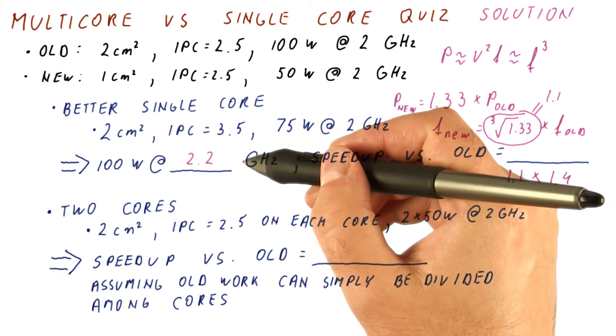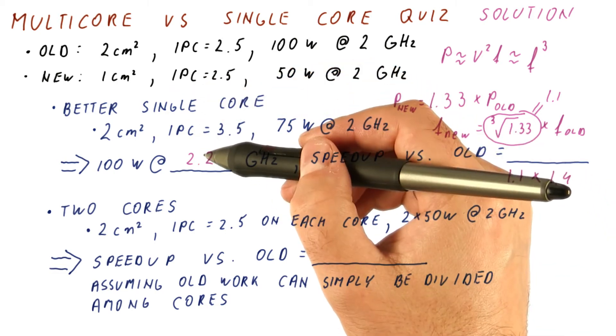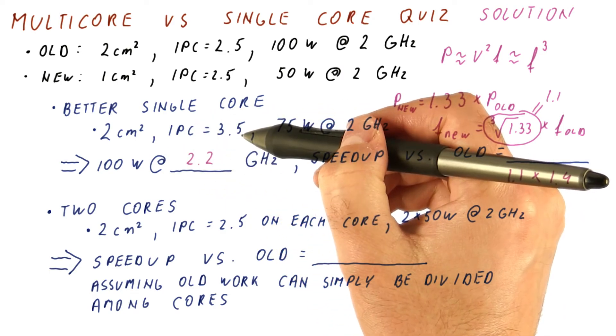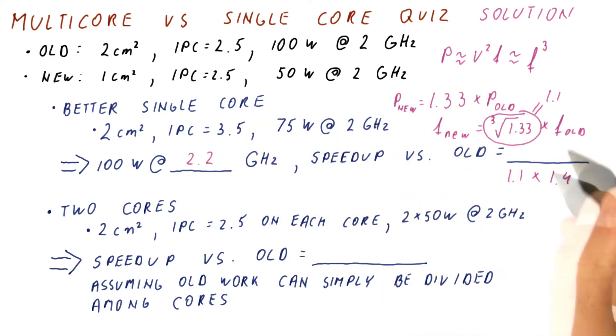Times the speedup we achieve because we have fewer instructions. But because we are executing exactly the same code, that speedup is 1. We don't speed up really. So our overall speedup is just this, and it ends up being 1.54.